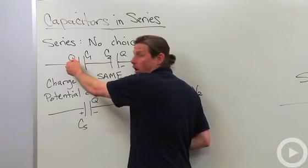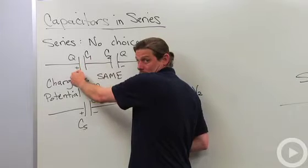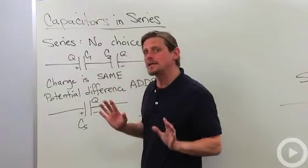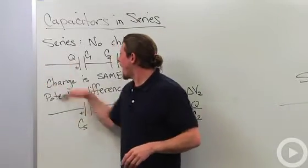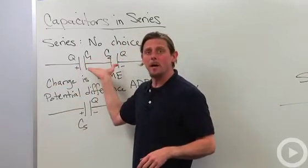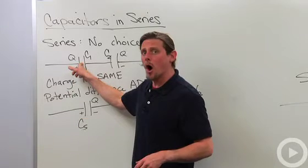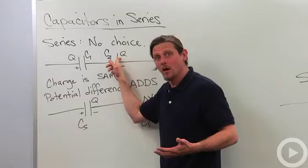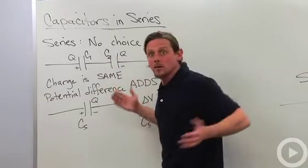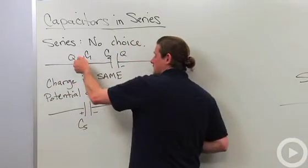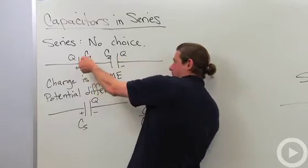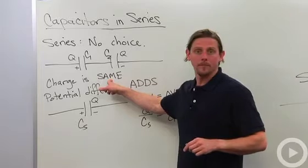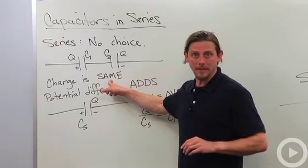We've got a charge on this first capacitor, and it's plus on that side. That means it's minus on that side. Now, here's the idea. As I was charging up this series combination of capacitors, all the charge that came on C1 had to be taken from C2 because there was no choice. The charge, if it's coming around like this, it's collecting here. It's got to come around like that.